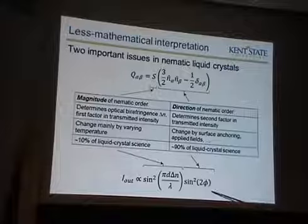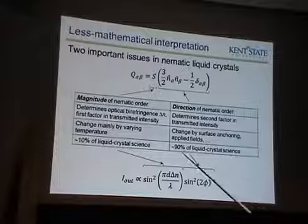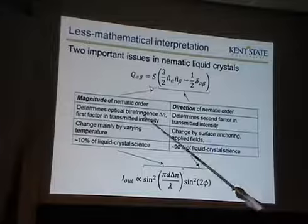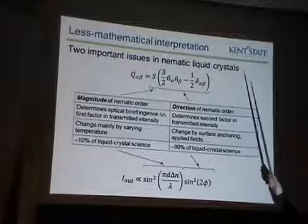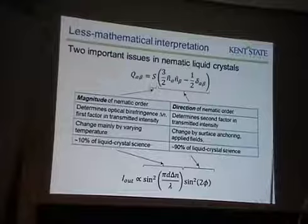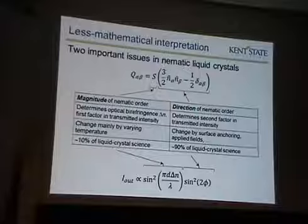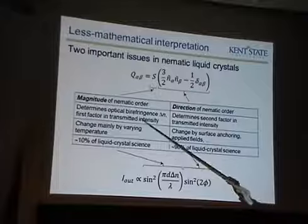For the direction, that is controlled by other kinds of factors like surface anchoring and applied fields — other ways that people might manipulate liquid crystal cells. It determines the second factor in the transmitted intensity, the sine squared of φ. Liquid crystal science involves understanding and controlling these two things — the magnitude and the direction. I would say that about 10% of liquid crystal science involves the magnitude, and about 90% involves the direction. That's an approximation, but something like that. You can check if it turns out to be 10% of the lectures on magnitude and 90% on direction in the rest of this winter school.